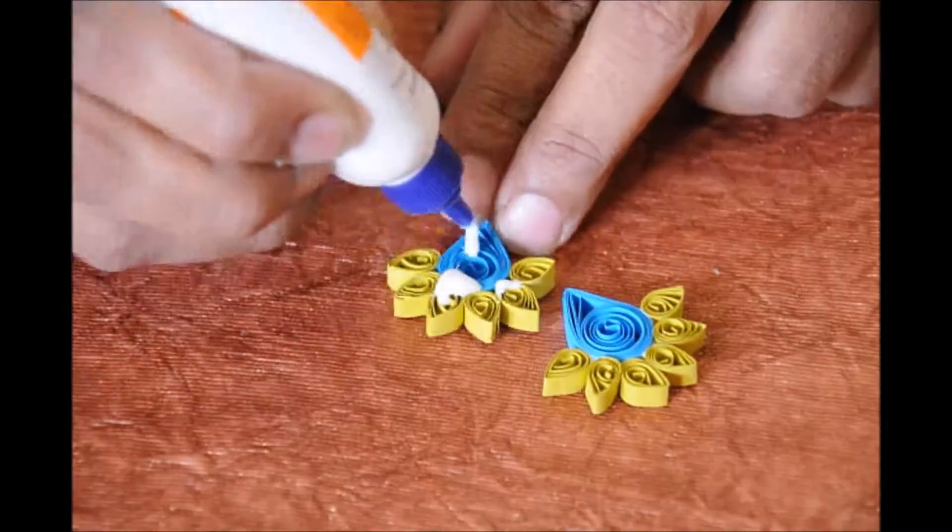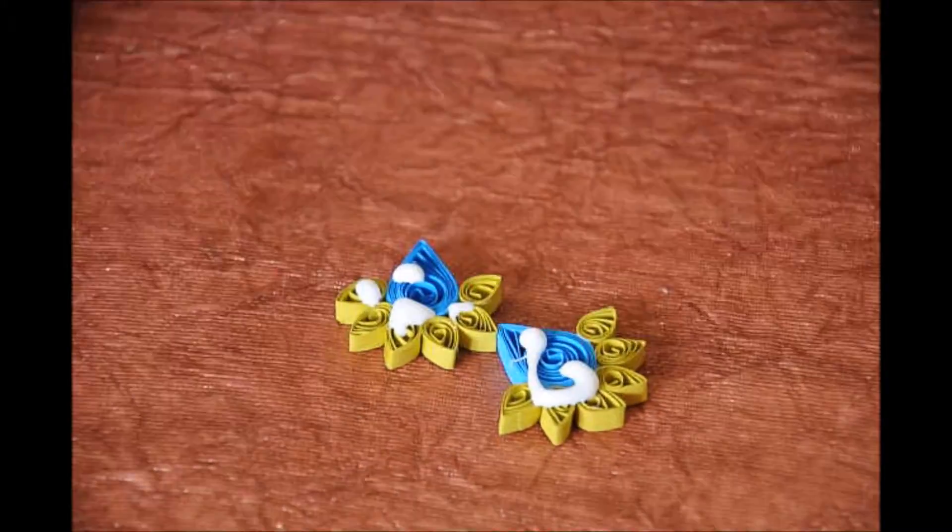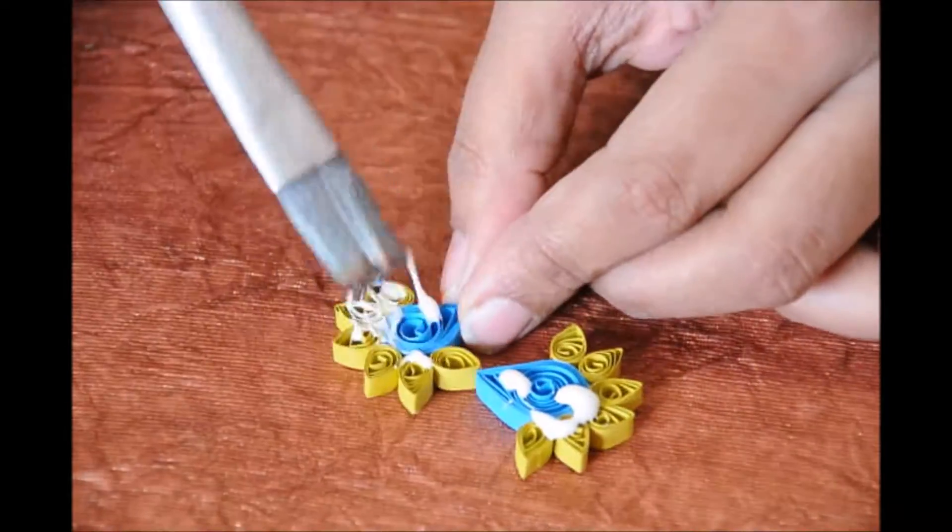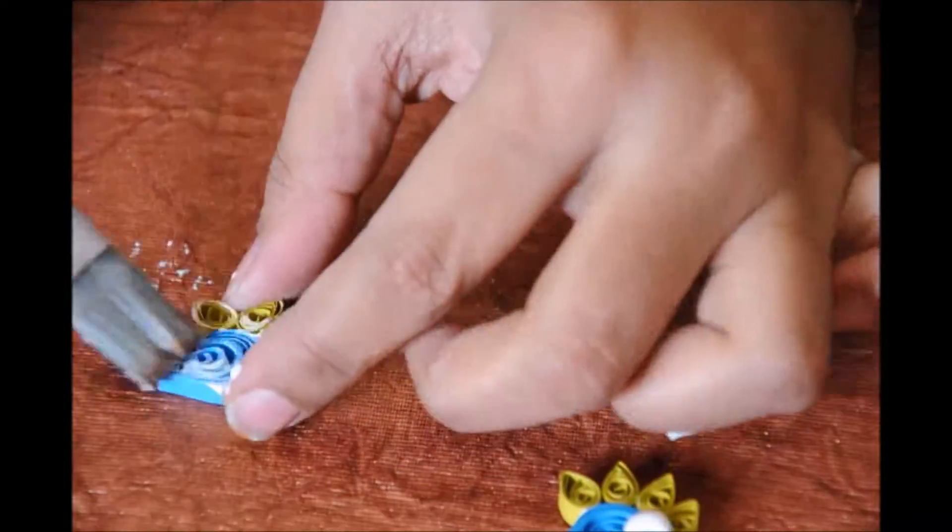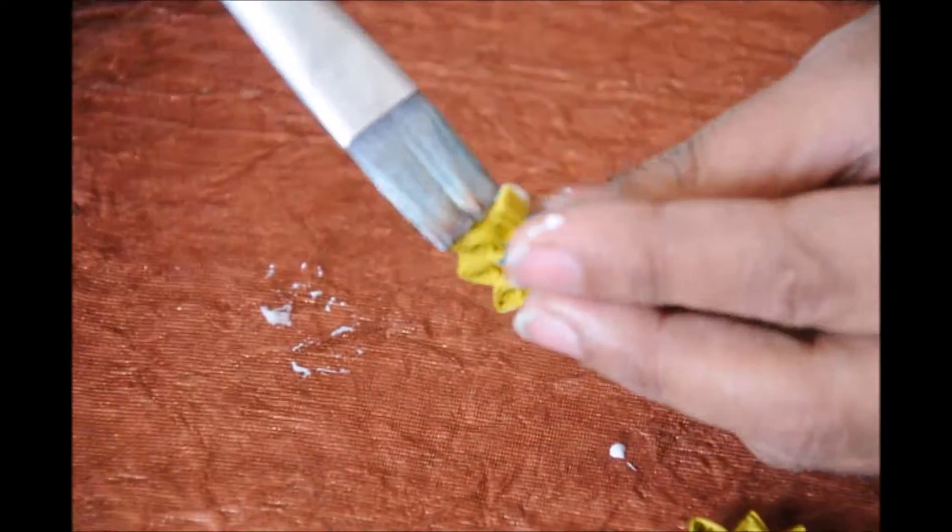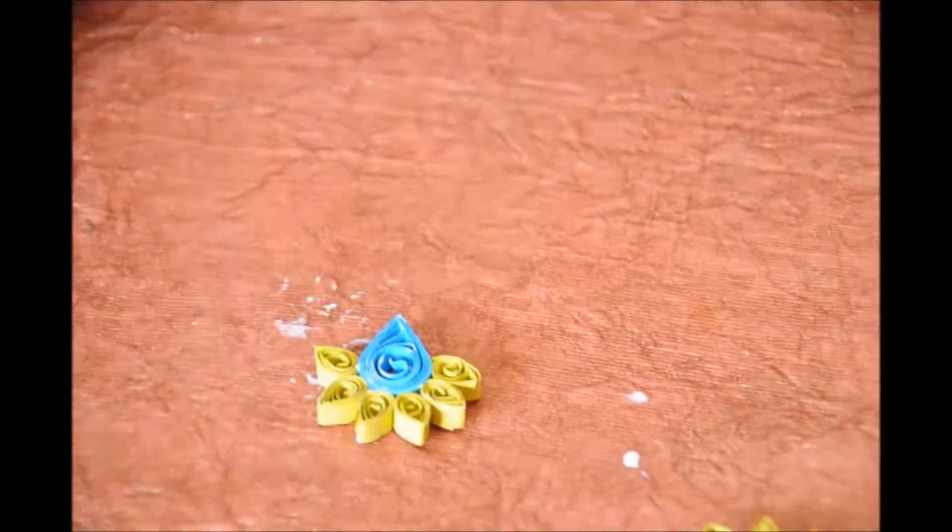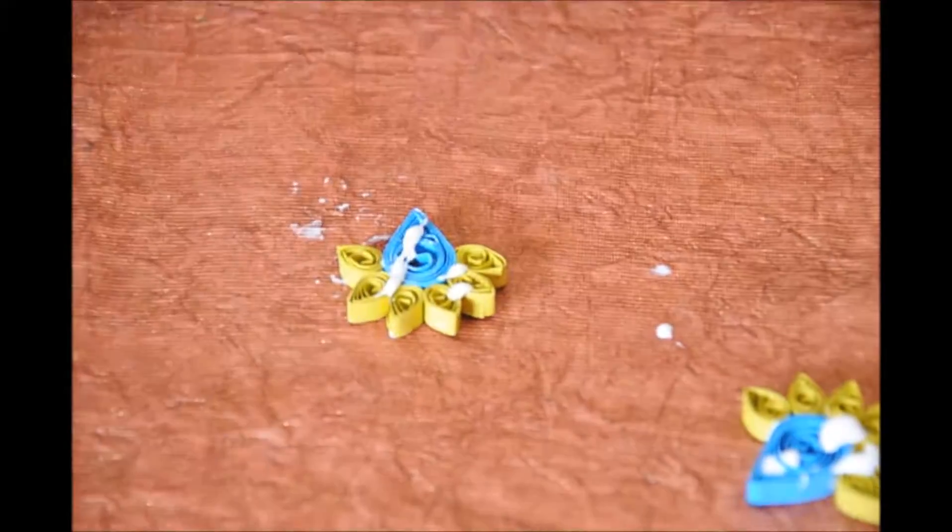I made the second one also and now I am applying a thick coat of glue all over the earring. And I am spreading it nicely even on the sides, back and everywhere. First let it dry so that when you turn it, it won't come out. Let it dry for three to four minutes.